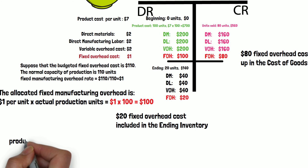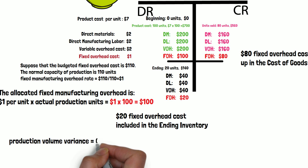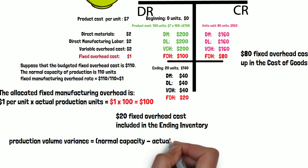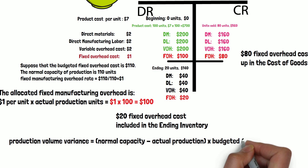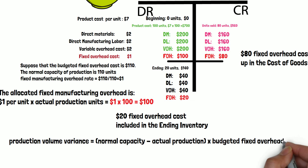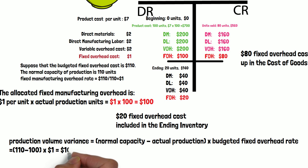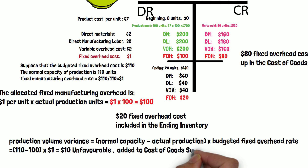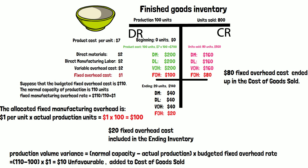The production volume variance is calculated as normal capacity minus actual production units, times the budgeted fixed manufacturing overhead rate. That will be 110 minus 100 times $1, so it's $10 unfavorable, because the actual production is under the normal production capacity. This variance cost will be added to the cost of goods sold.